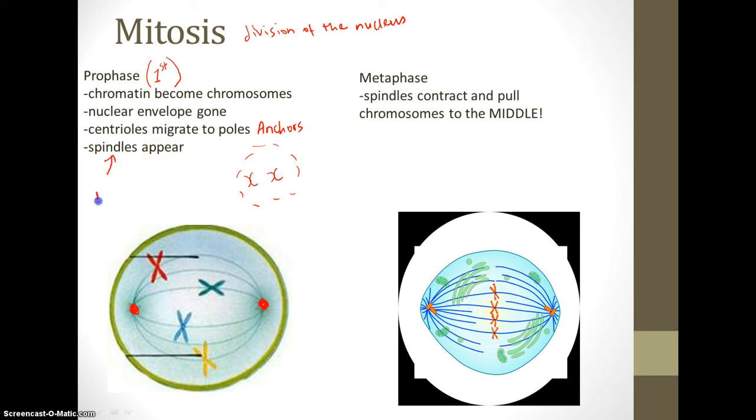Then we have spindles. Spindles are like rope or string, and they connect the centrioles together. We have the spindles right here, the rope we can see that connects. The chromosomes are hooked onto the spindles as we can see here. That is the first part of mitosis: prophase.